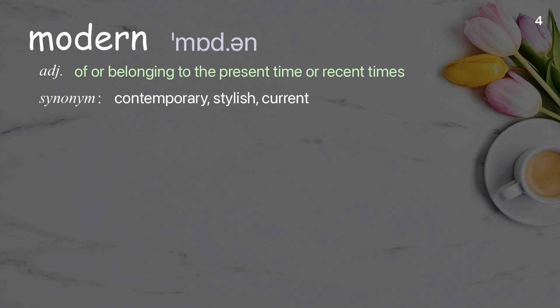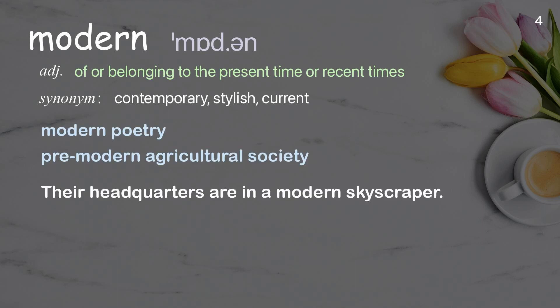Modern: Of or belonging to the present time or recent times. Examples: Modern poetry, Premodern agricultural society. Their headquarters are in a modern skyscraper.